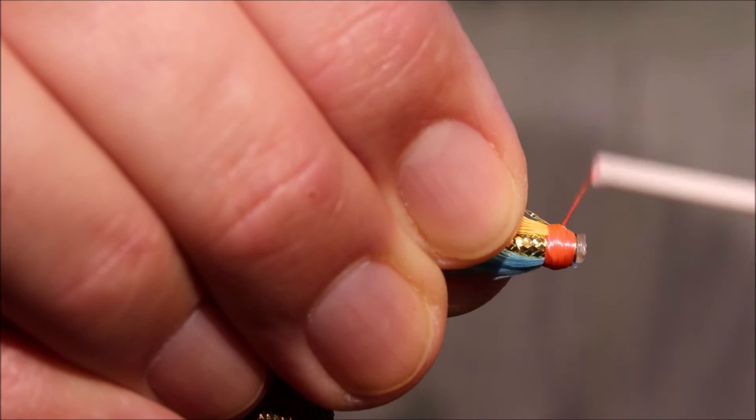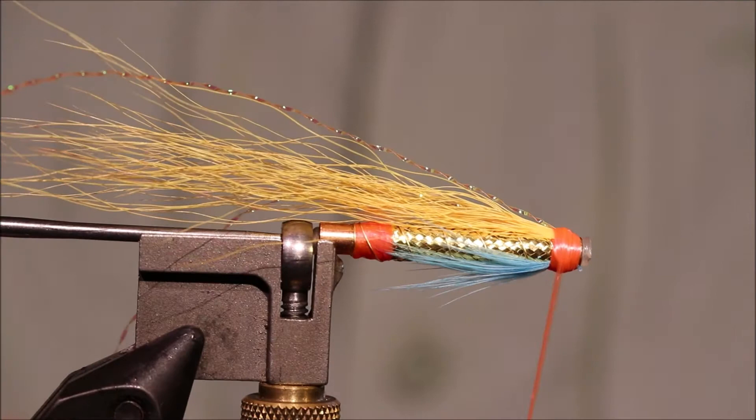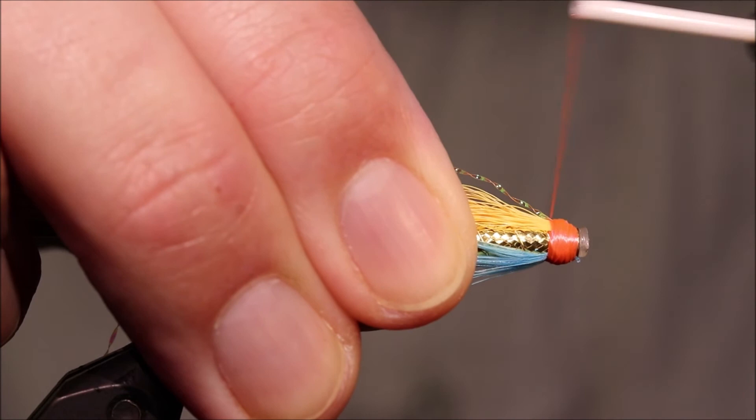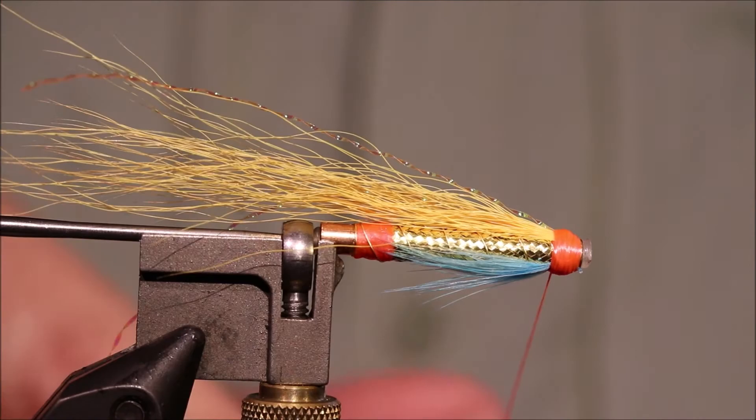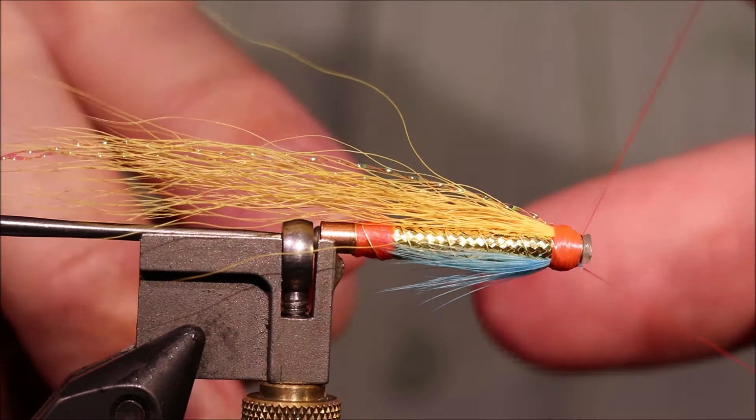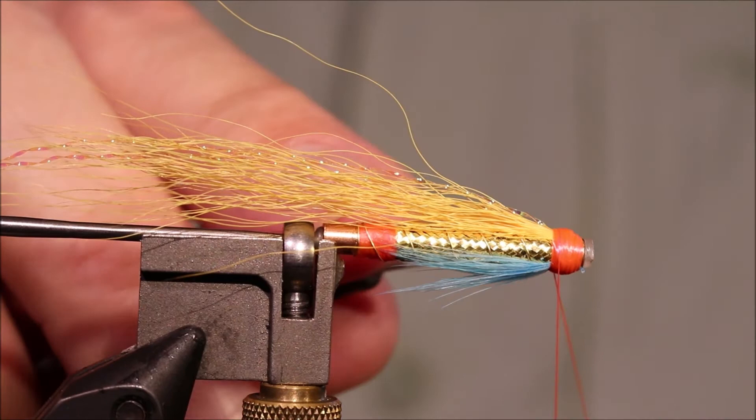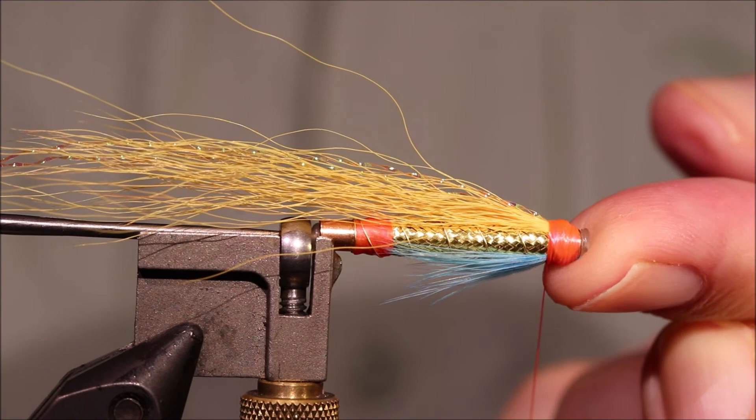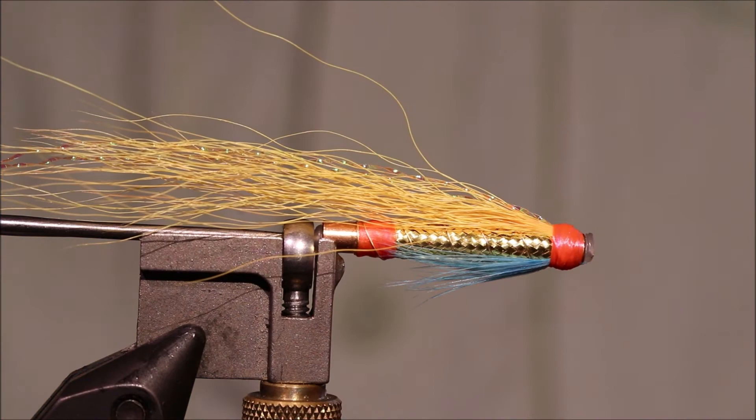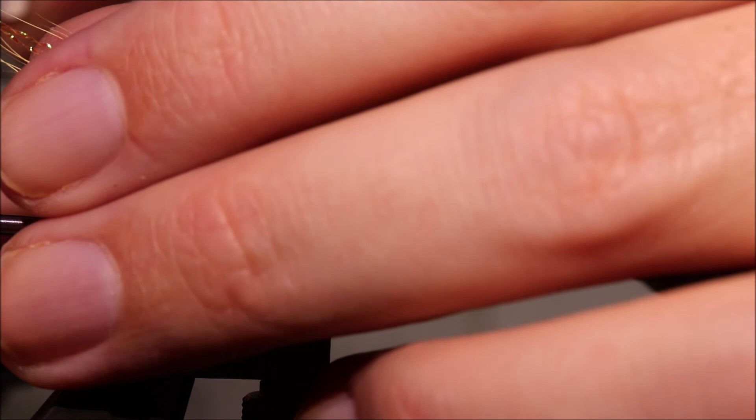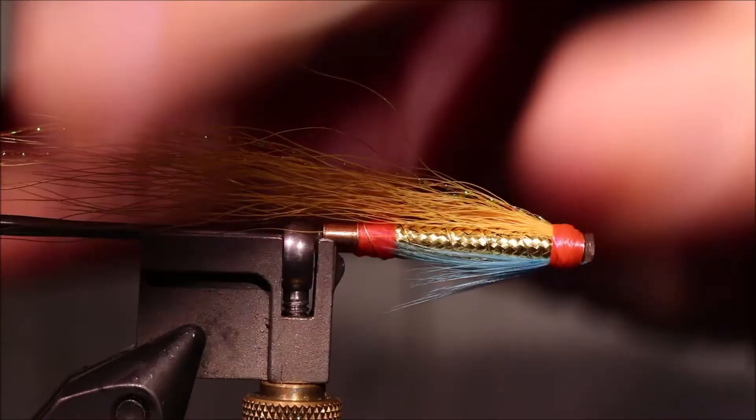And just build your head neat. And there we go. Like that. And we've just got to whip finish this by hand. You don't actually need to whip finish a tube, you can just put a bit of glue on it, wrap over it and it's very very strong. Tighten up that knot. Trim away the waste. Trim the crystal flash so that both strands are slightly different lengths but not longer than the wing itself.